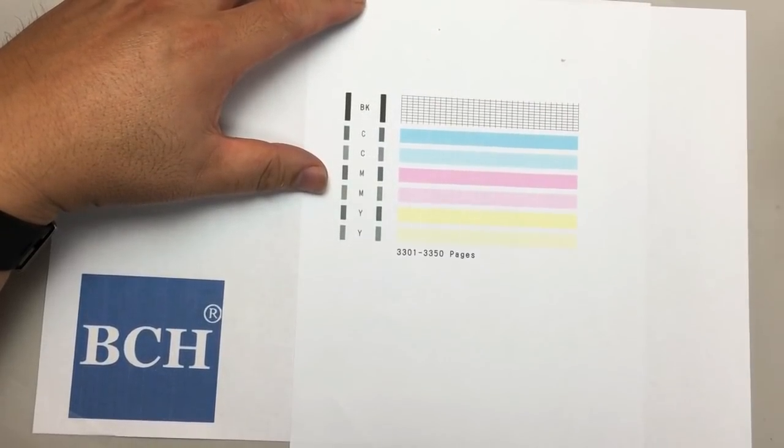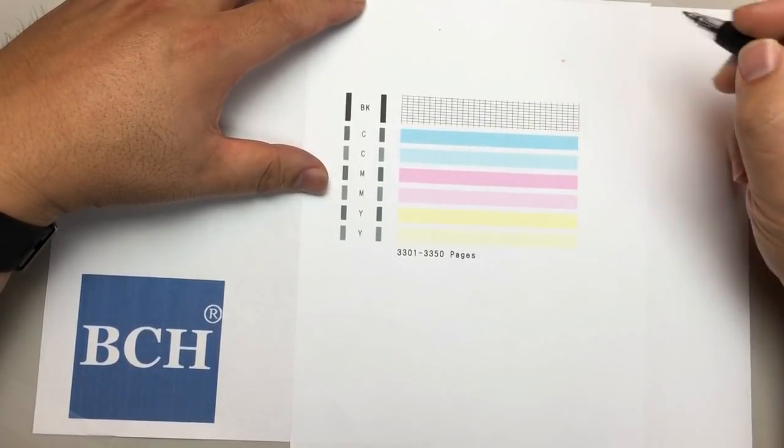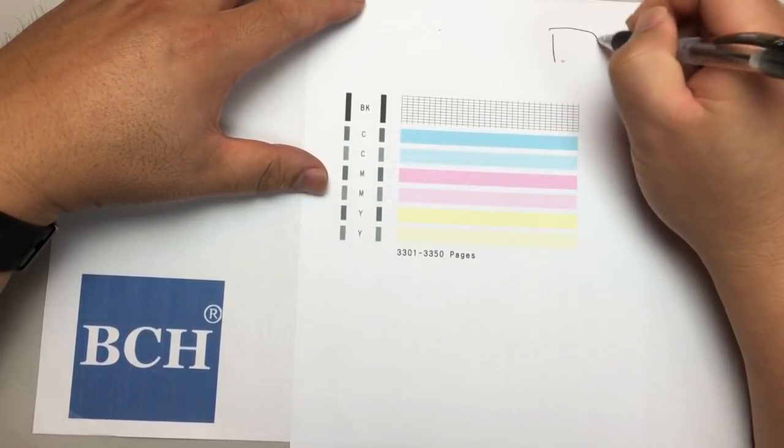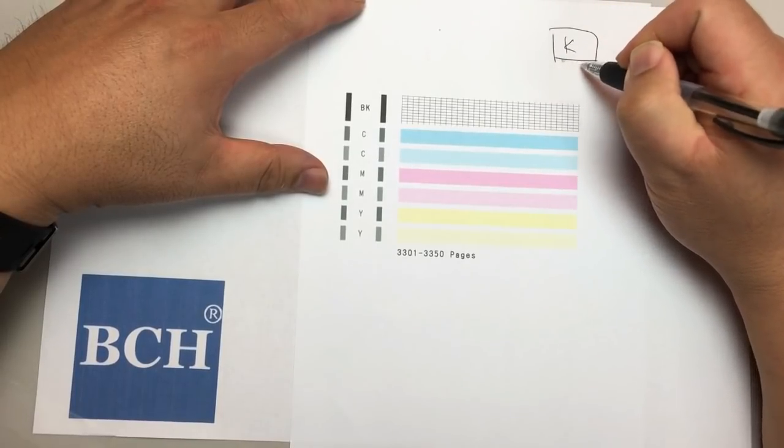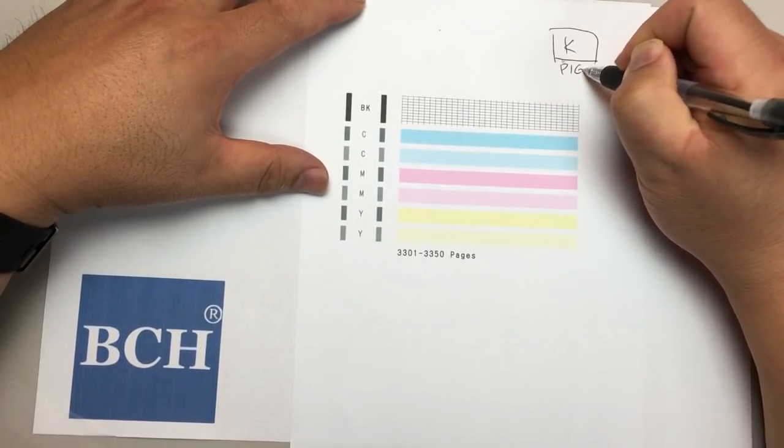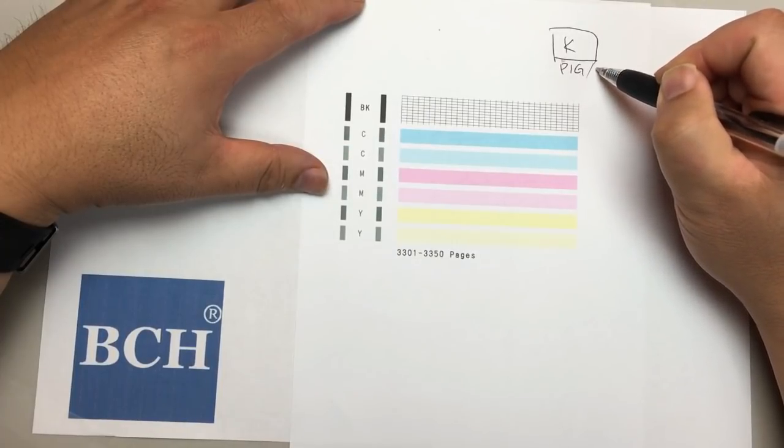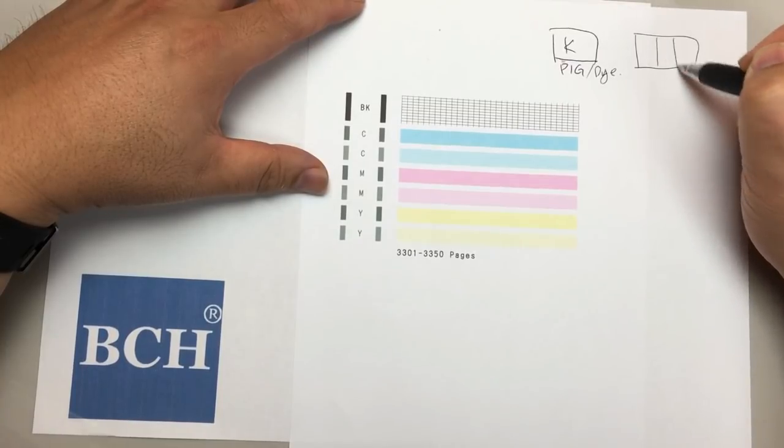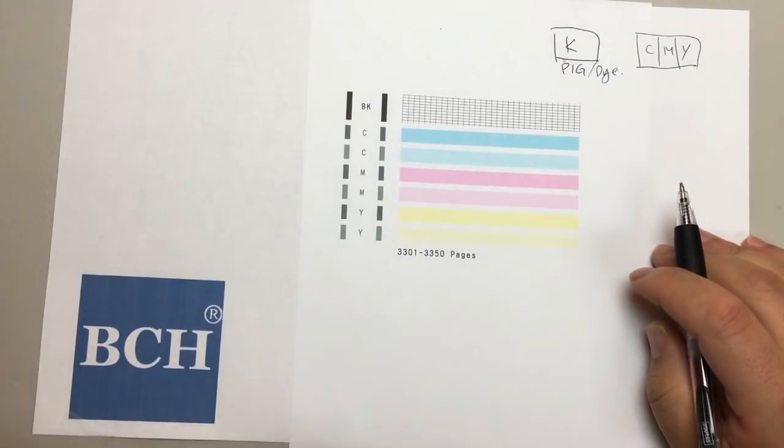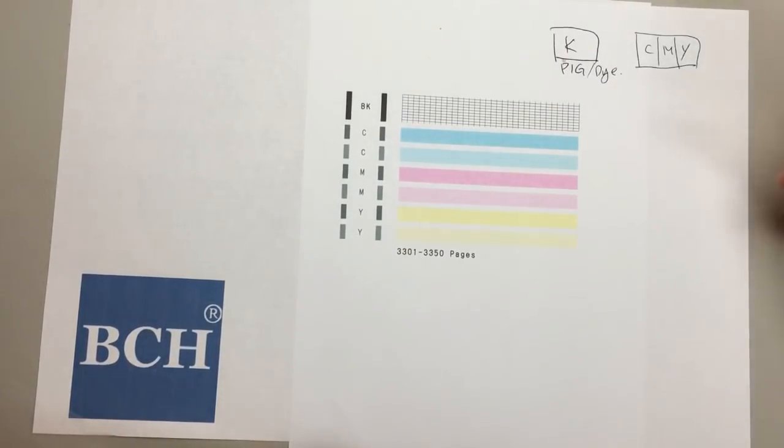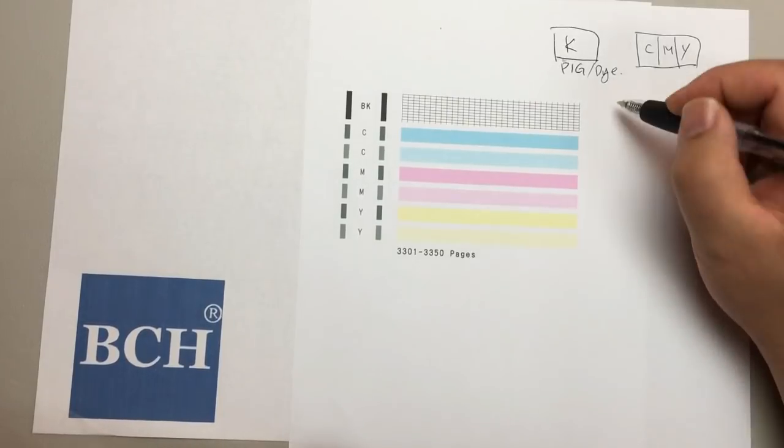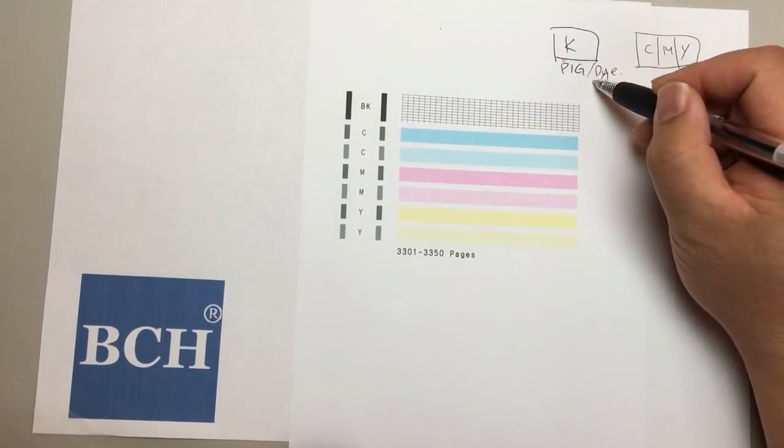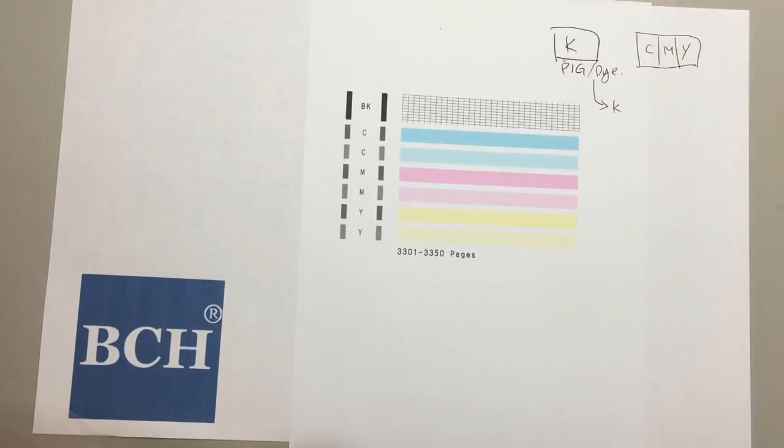This is a standard nozzle check page. What happens is you have two cartridges. One is black that has pigment ink or maybe you convert it to dye ink already. Then you have another cartridge, the cartridge has CMY. If you print a document in black, the printer will just use the black to print the document.